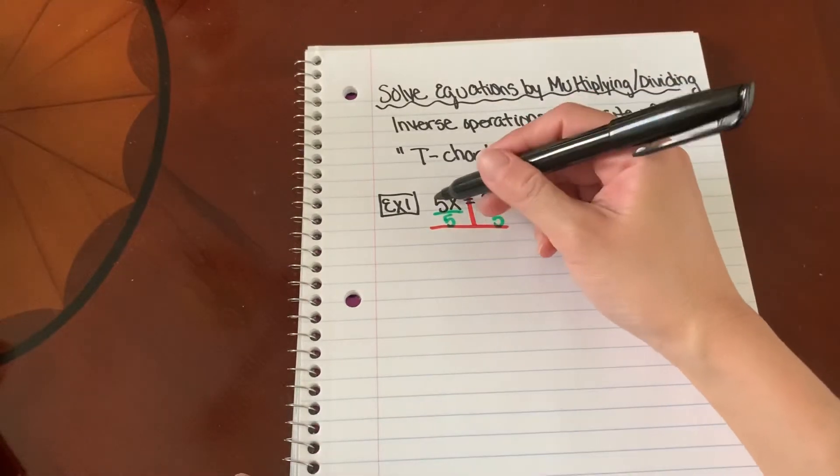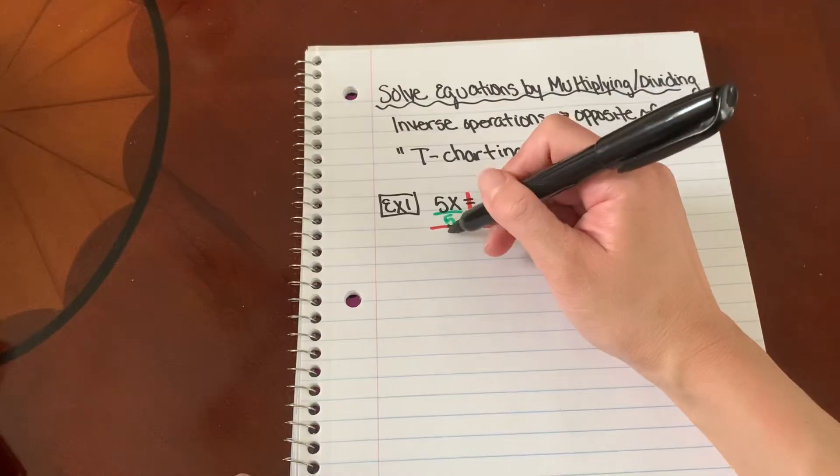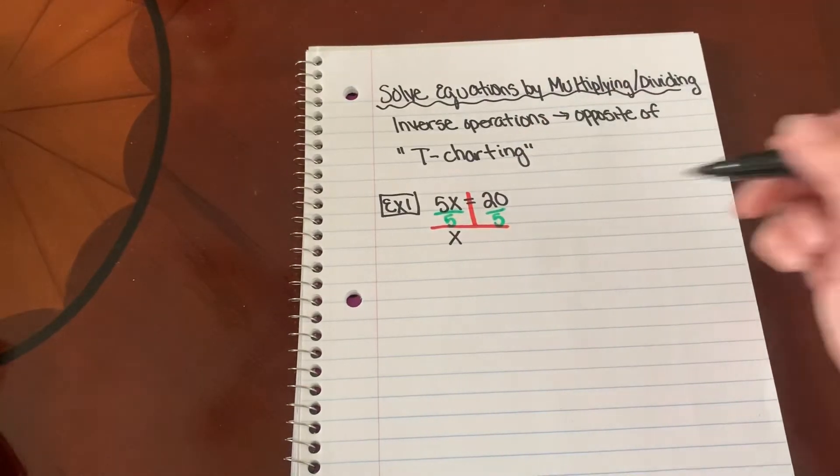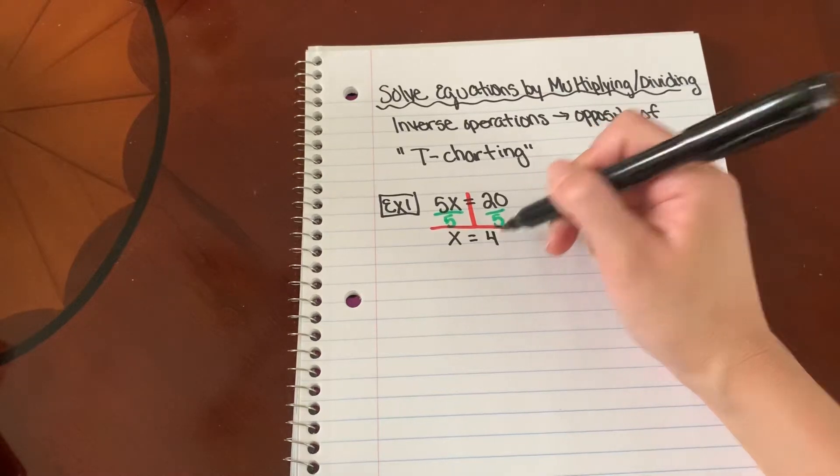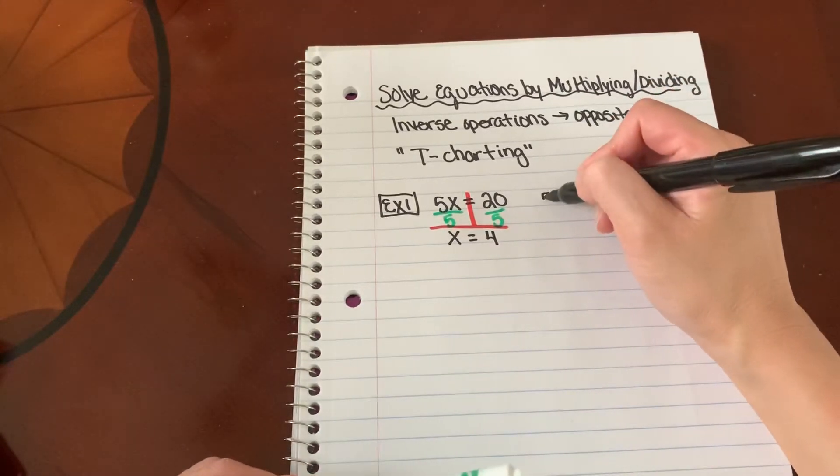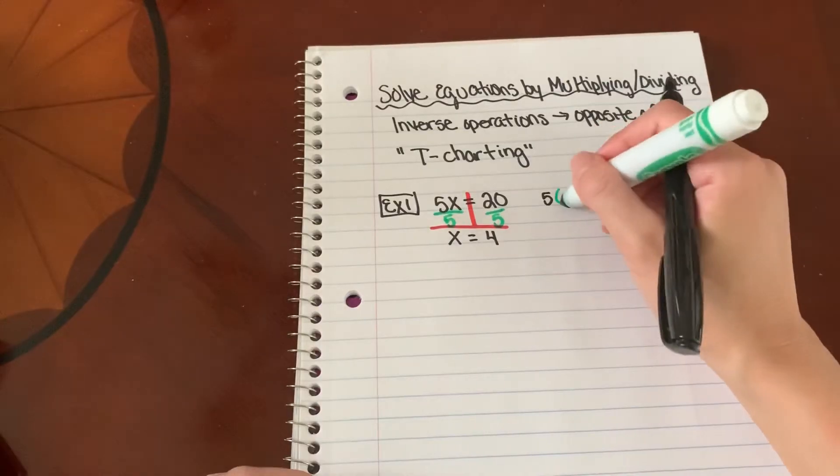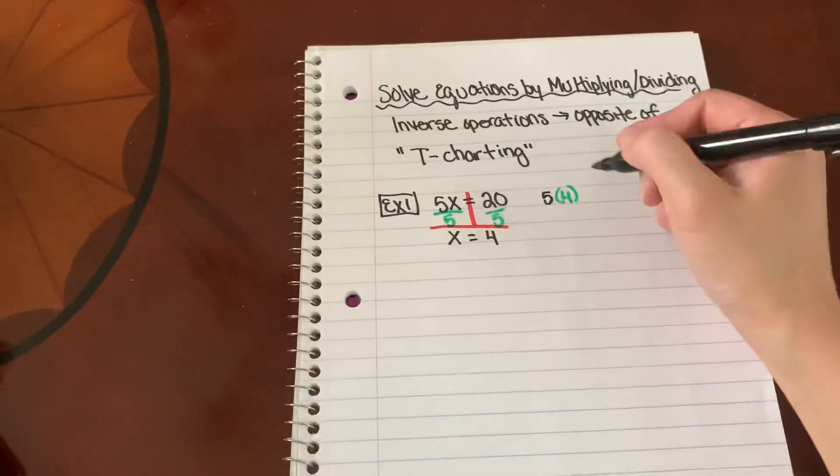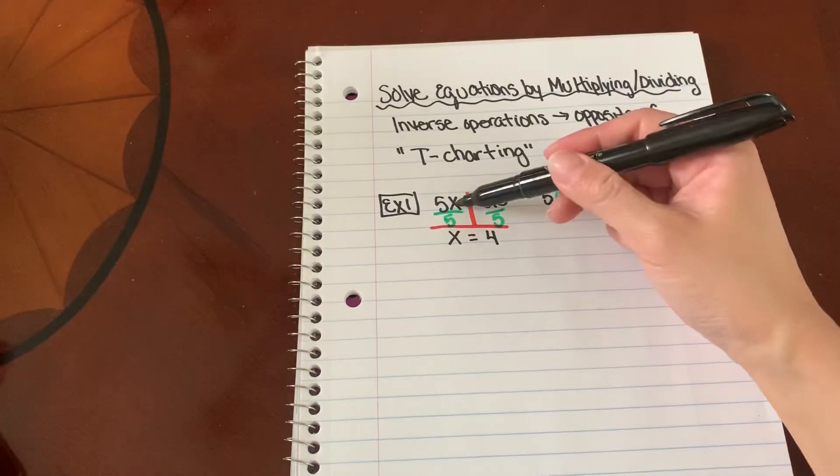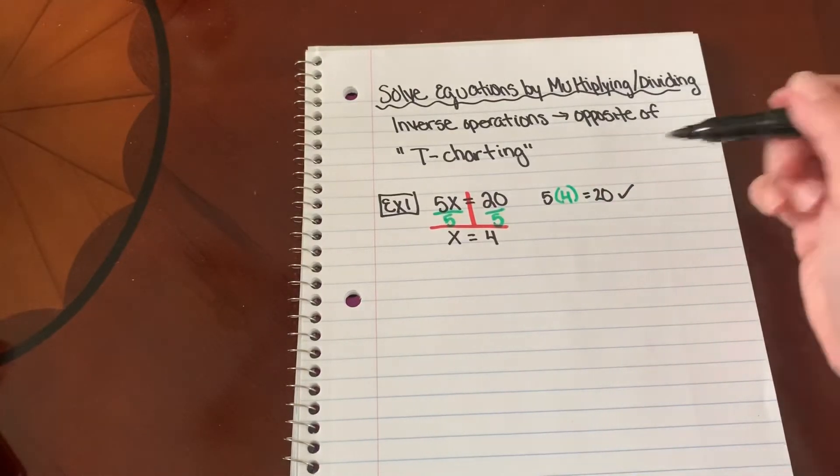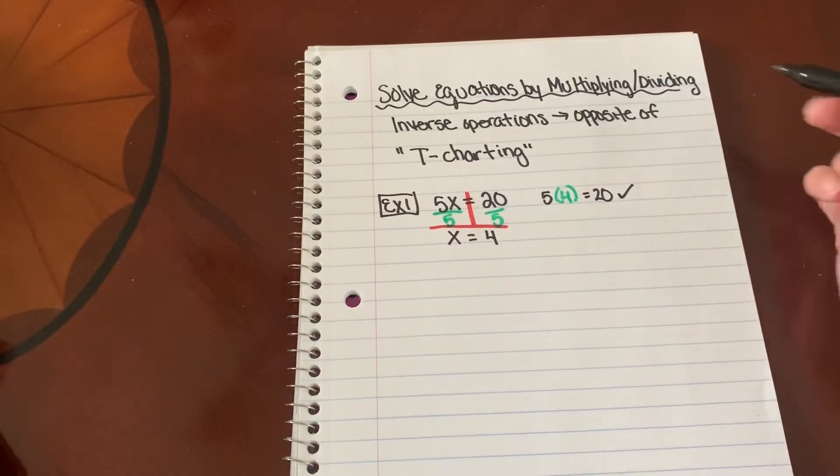What is 5 divided by 5? That is 1. So here is your 1x and that's going to equal 20 divided by 5, which is going to be 4. And I can easily check this. Is 5 times 4, does that equal 20? Yes. If I plug my answer back into my original equation, I should get the original answer.